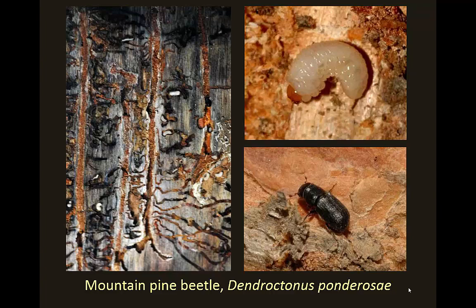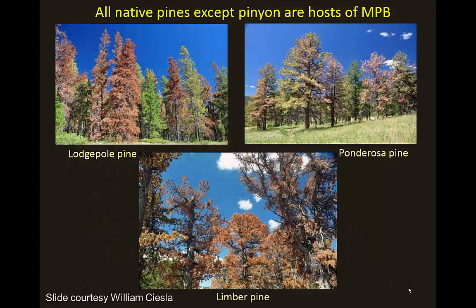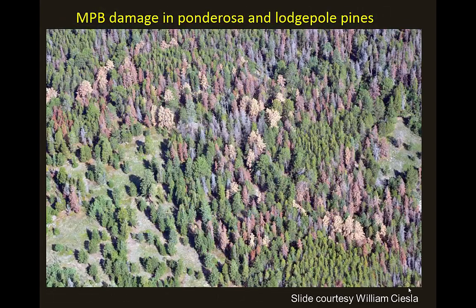Mountain pine beetle is associated with pines in particular — lodgepole pine, ponderosa pine, and limber pine. Less commonly it will be found in some other kinds of pines; we've seen it affecting Austrian pine in some front-range communities, but that's more of an incidental infestation. The native hosts are the three listed here, and during outbreaks they can extensively kill trees. There has been an outbreak going on for close to 15 years, although it has recently concluded or largely concluded.